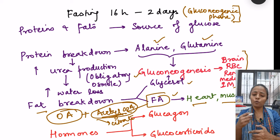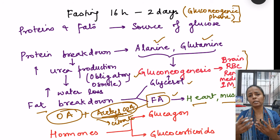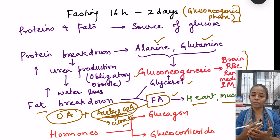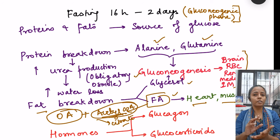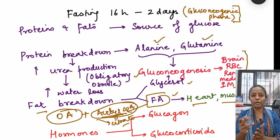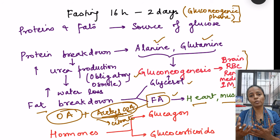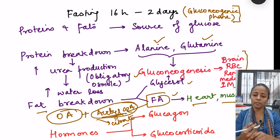Instead, as more and more fat breakdown occurs, more and more acetyl-CoA forms, leading to the generation of ketone bodies. So in the fasting phase of 16 hours to 2 days, there is switching of fuel from glucose to fatty acids for heart and muscle, while for tissues solely dependent on glucose, gluconeogenesis is occurring.